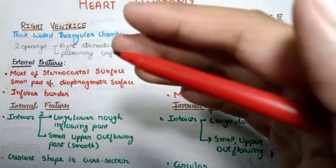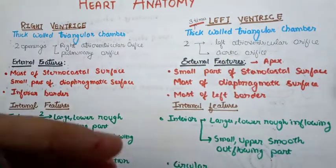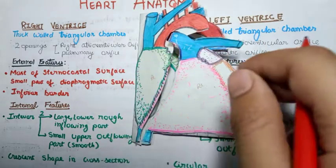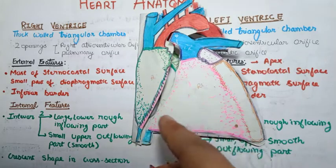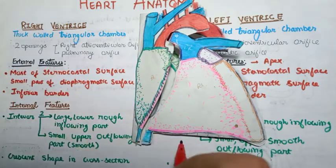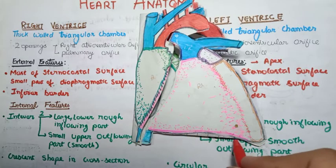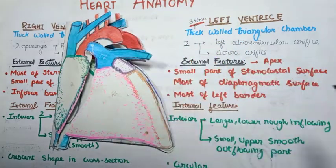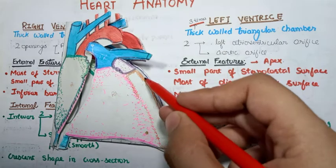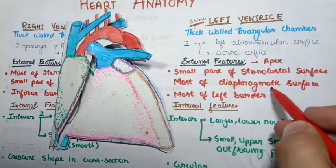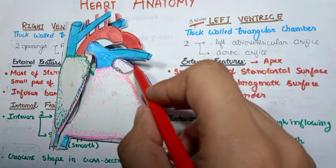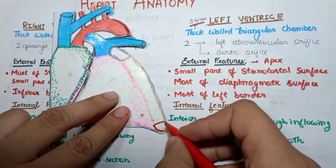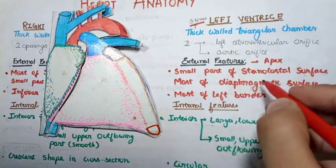Regarding external features: most of the sternocostal surface — the anterior side — is occupied by the right ventricle, and only a small part of the diaphragmatic or lower surface is occupied by the right ventricle. The right ventricle also forms a major portion of the inferior border, as visible in this model. The left ventricle forms only a small portion of the sternocostal surface, most of the diaphragmatic surface, most of the left border, and it forms the apex entirely — the right ventricle has no contribution to the apex.